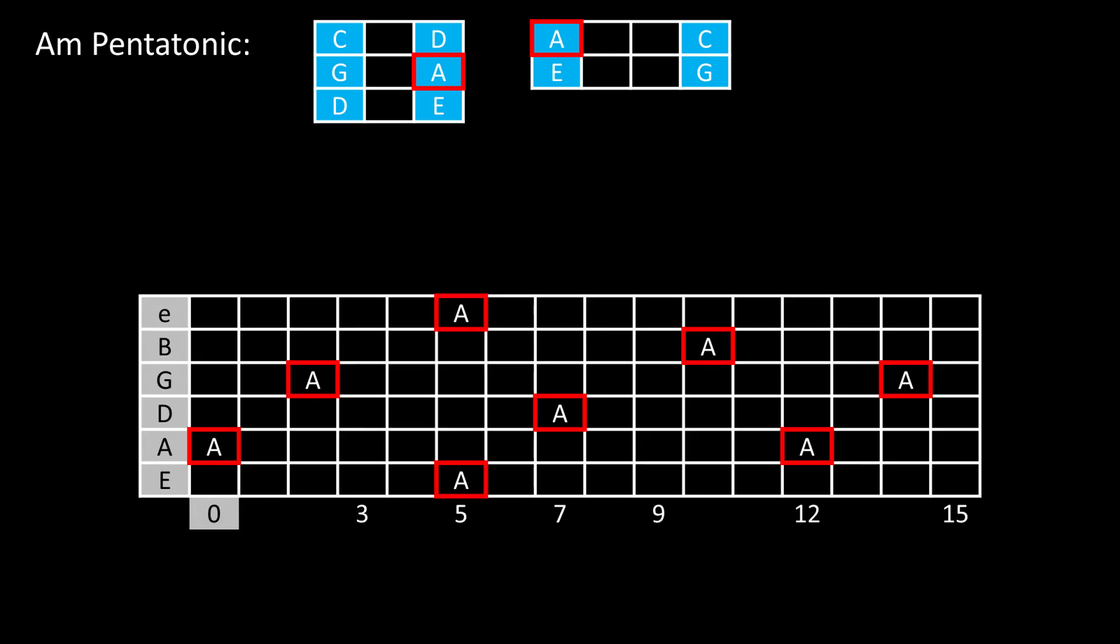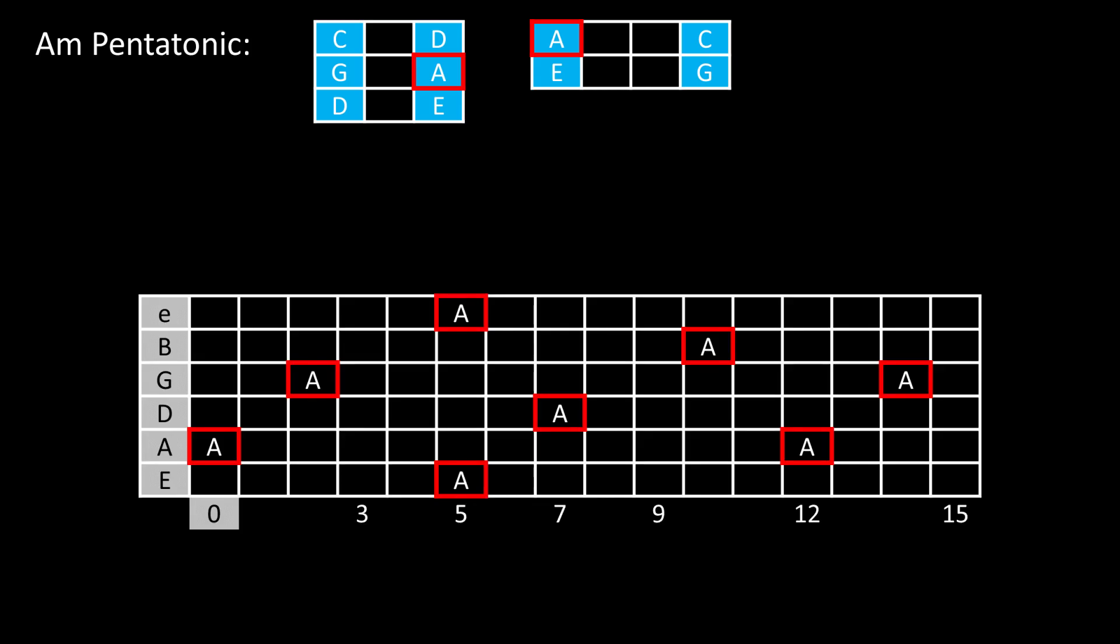So for each A note on the neck, we can hang the boxes at the root note. For example, here is a 3x3 box, and on the same root, we can hang a 2x4 box. Notice that some positions will need to consider the B string shift.